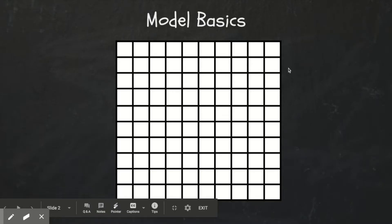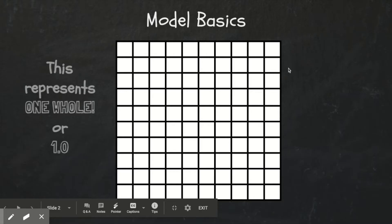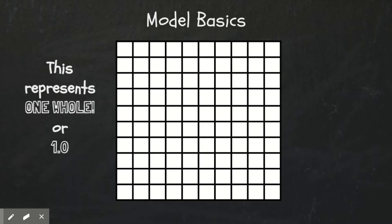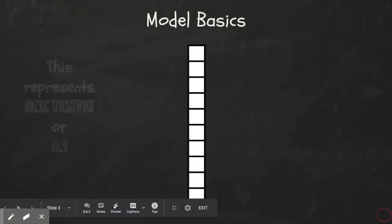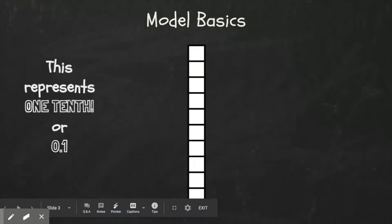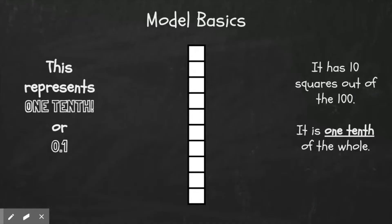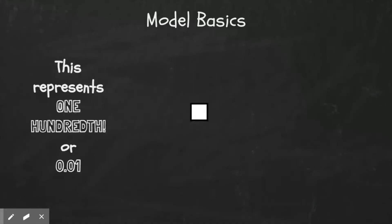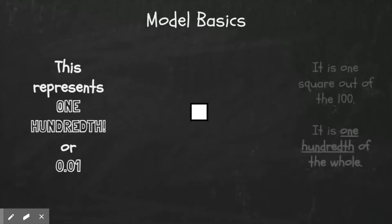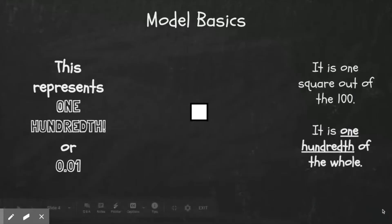We're going to start with model basics. This is one whole — it's a 10 by 10 square with 100 smaller squares. This is a tenth, or one tenth of the whole. This is one hundredth, representing one hundredth of the whole.